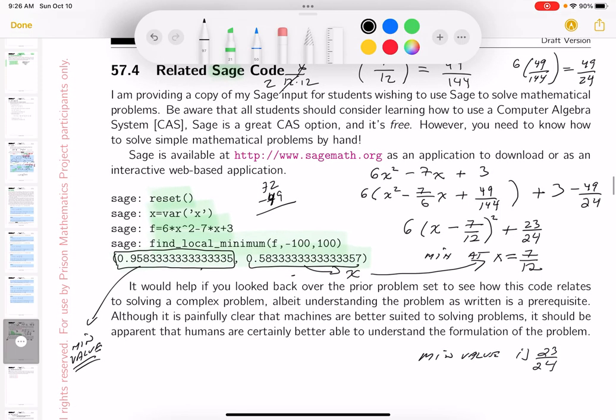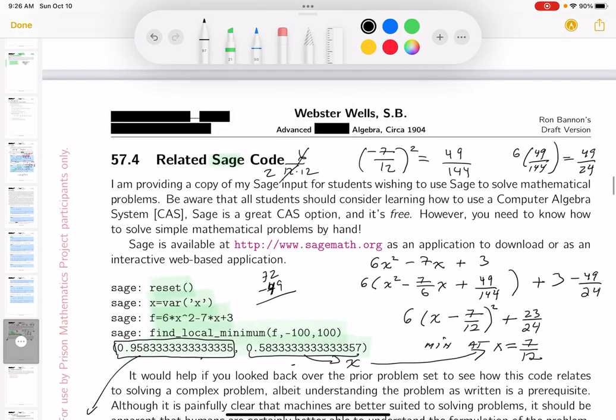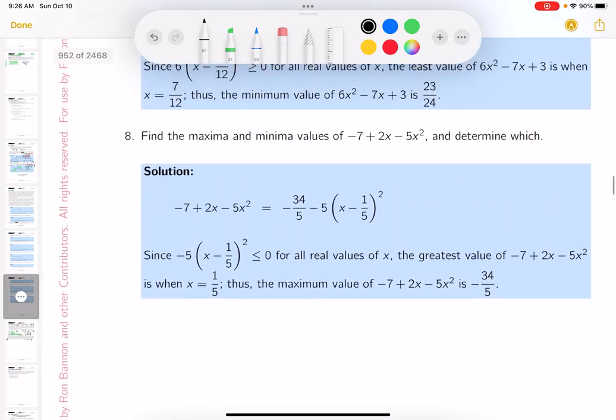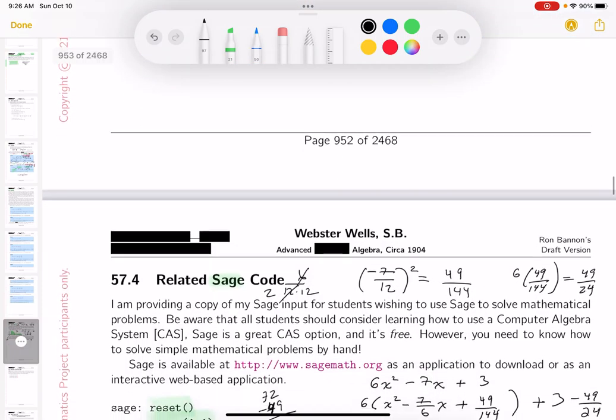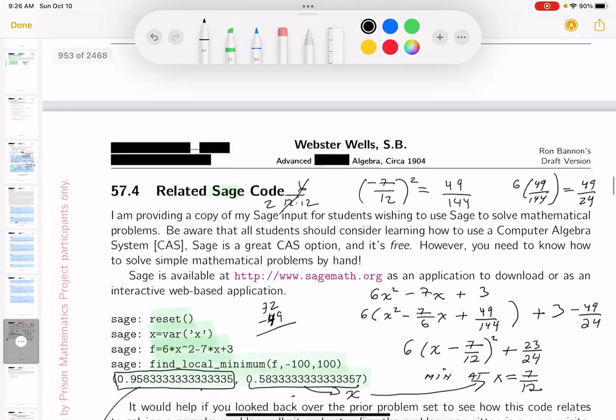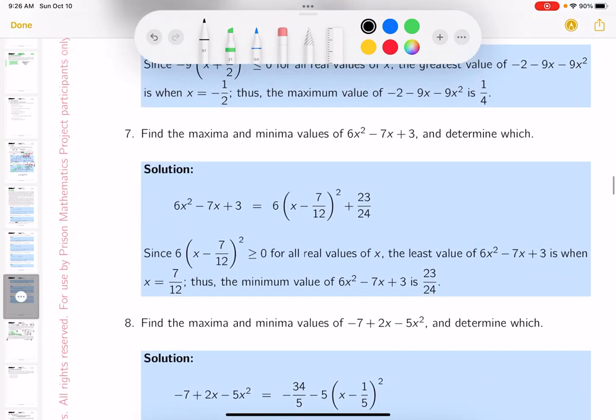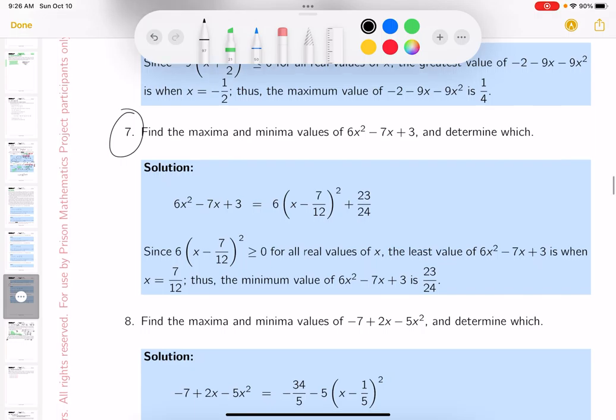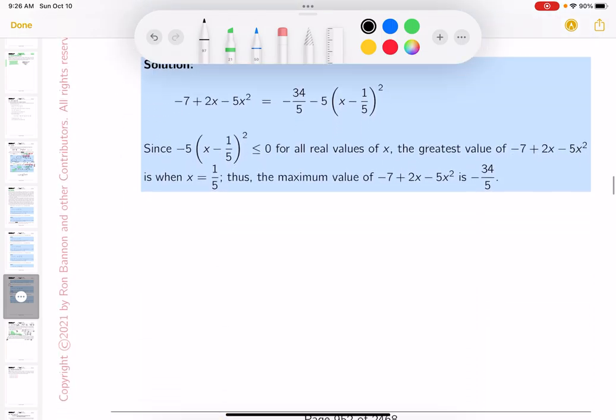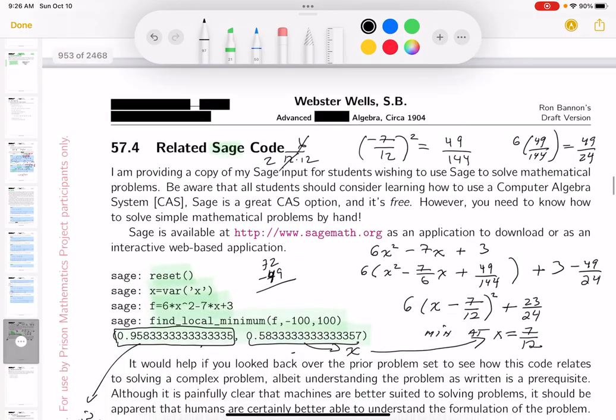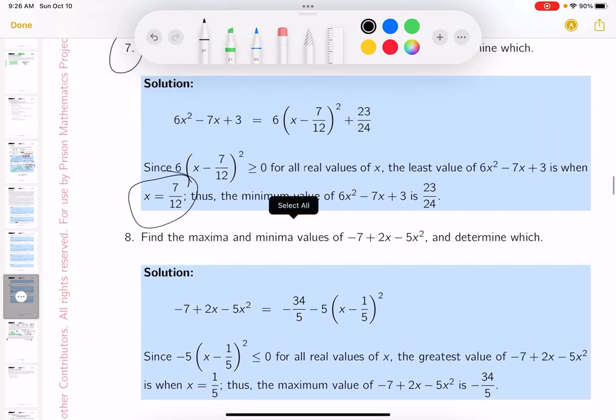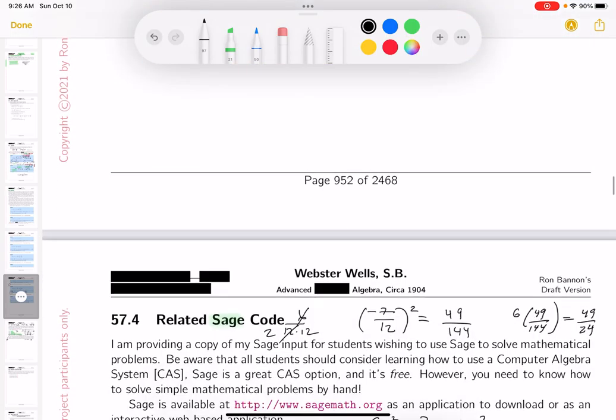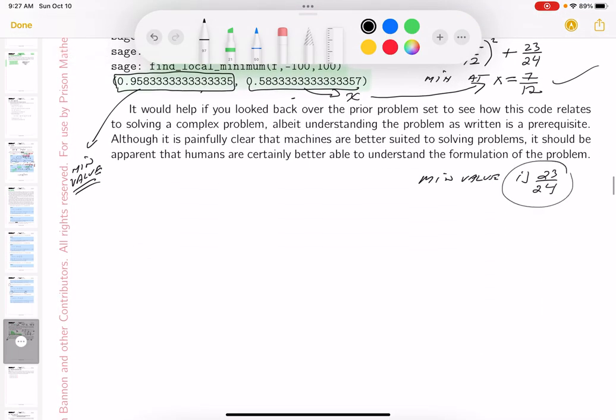So I want to point out 23 over 24 is this number right here. This is the minimum value. And this is the x value. This is the x value. So, again, SAGE is really nice software, but you'd have to be able to read that and understand it. I just want to go back in the notes and show you that these things pertain to the problem. So we're looking at the 6x squared thing. Is that the problem? Yeah. Right here. It's the problem that you did in the homework. And what are you seeing? It occurs at 7 twelfths. Let me point out this to you. We just figured that out. And 23 24ths is the minimum value.